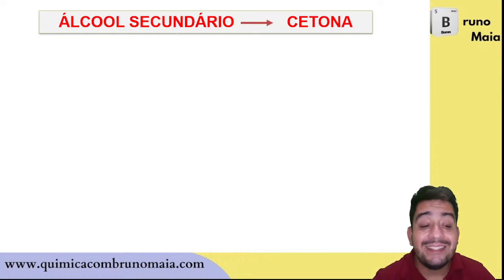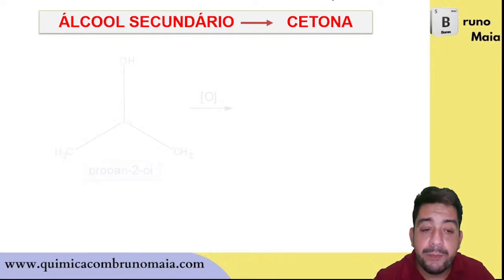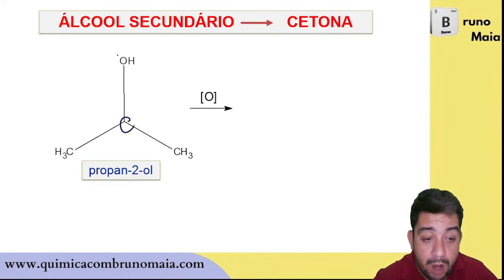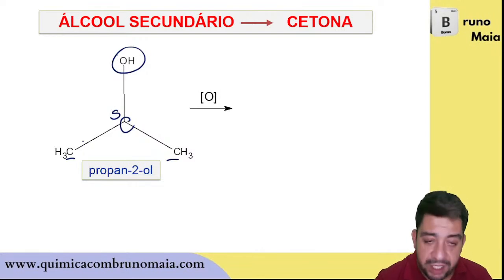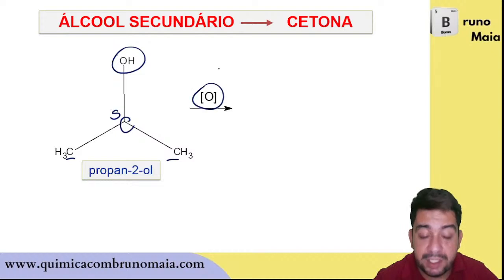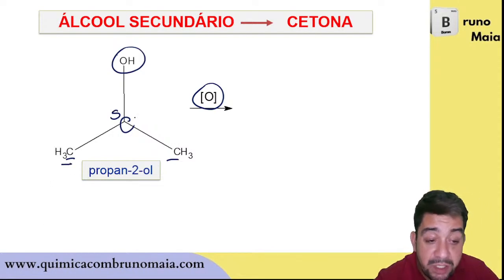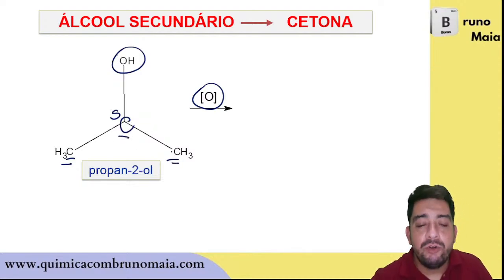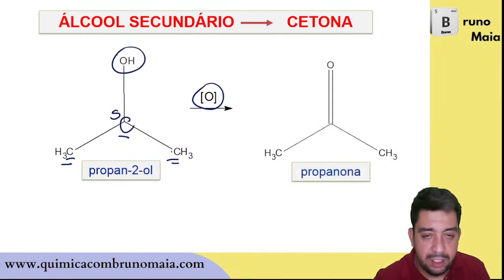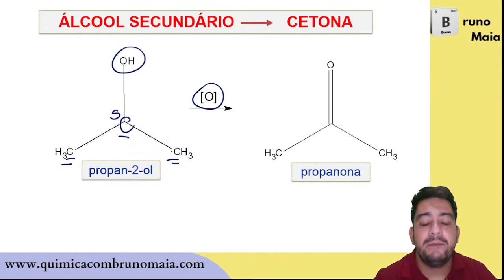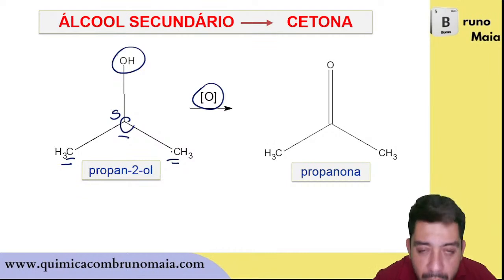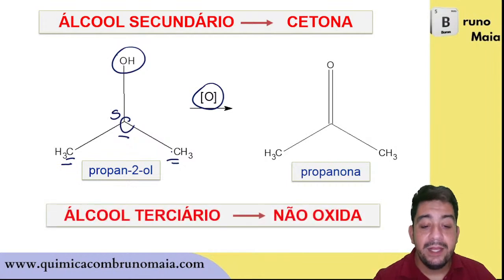If the question states that a primary alcohol underwent energetic oxidation, it goes directly to the carboxylic acid. For a secondary alcohol, oxidation produces a ketone — this must be memorized. A secondary alcohol has the hydroxyl attached to a secondary carbon. For example, 2-propanol: maintain the carbons of the chain and place a carbonyl (C=O) at the carbon where the hydroxyl was. The result is a ketone.